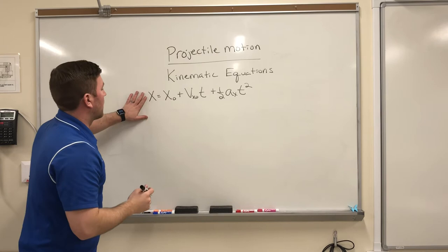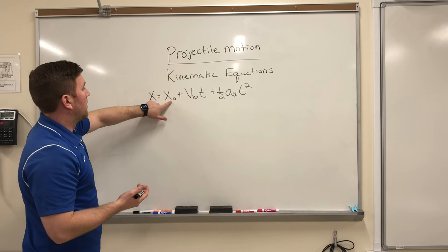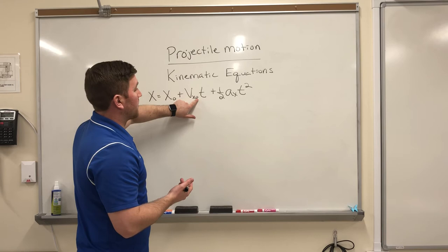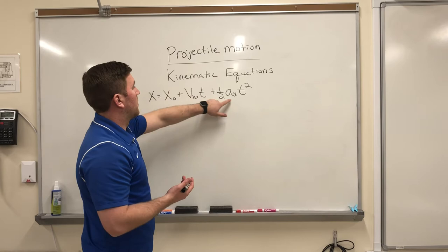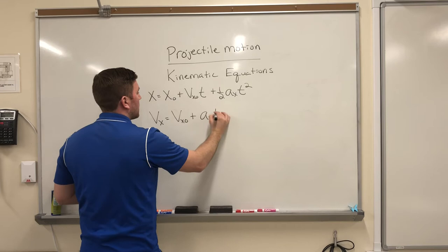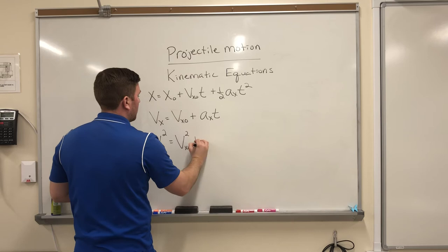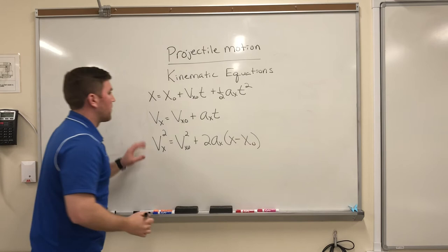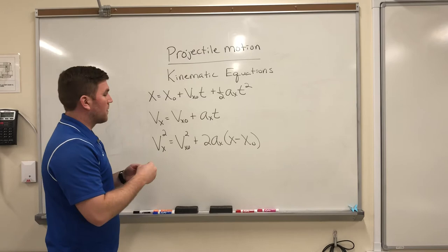As you can see with this first one, x stands for my position, my final position, my initial position. Anytime you see a sub-zero, it stands for initial. So initial horizontal velocity. We have our horizontal acceleration, and then our time. So there are three equations associated with horizontal motion. And these are the three. They all look very different. They all use basically the same variables. They stand for the same things in each one.